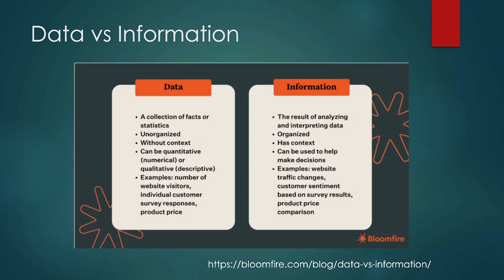When we have data it can be unorganized and doesn't necessarily have context. We can have quantitative or qualitative data. Quantitative data is numerical — so things like on a scale of 1 to 5 how much are you enjoying the weather? Whereas qualitative data is descriptive — please tell me how you feel about the weather today. Information is generally organized in some way, has some variety of context, and can then be used to help make decisions.